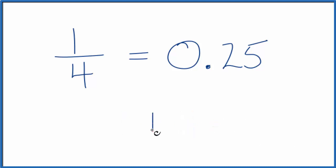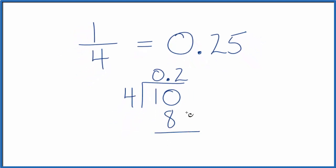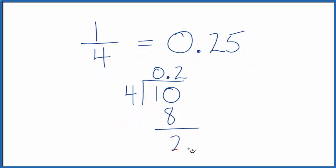We take one and we want to know how many times four will go into one. Right now it won't go into one at all. So let's put zero and point here and then we can put a zero here. Four goes into ten two times. Two times four is eight. Ten minus eight gives us two.